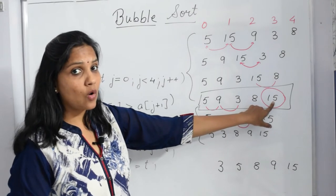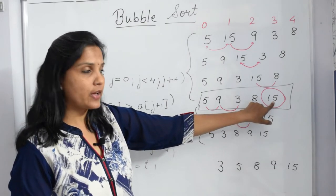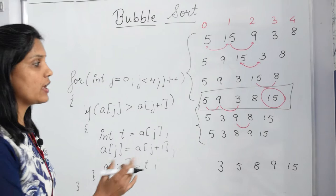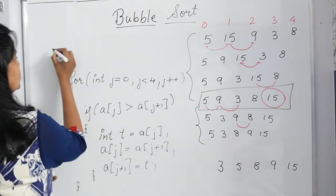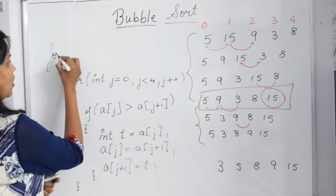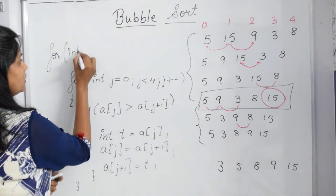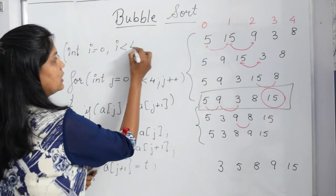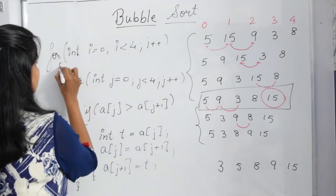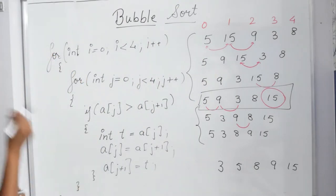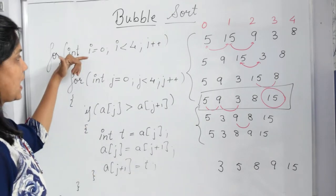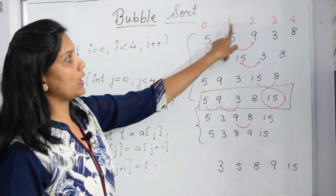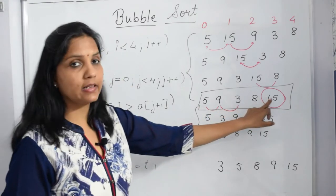Since the array is not yet sorted, we have to repeat these steps again and again. Whenever we need to repeat something, we use loops. So we put this whole inner block inside another outer for loop, which starts from 0 and also goes till 4, with i incrementing each time. When i is 0, the first time through, j starts from 0 and makes all the comparisons, giving us the first-pass result array.